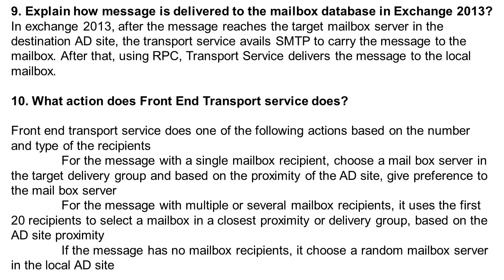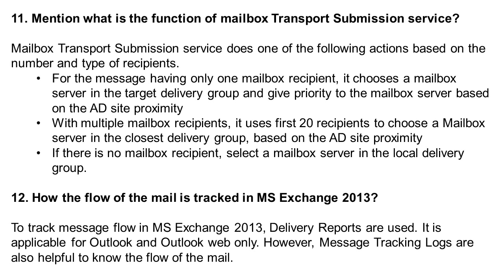What actions does the Front-End Transport Service perform? Based on the number and type of recipients: for a single mailbox recipient, it chooses a mailbox server in the target delivery group, giving preference based on AD site proximity. For multiple mailbox recipients, it uses the first 20 recipients to select a mailbox server in the closest proximity delivery group based on AD site proximity. If the message has no mailbox recipients, it chooses a random mailbox server in the local AD site.